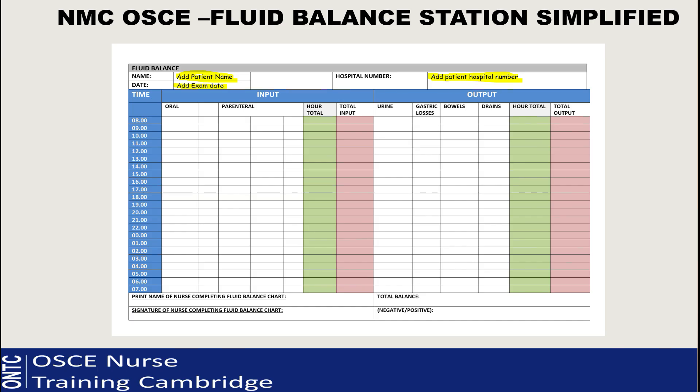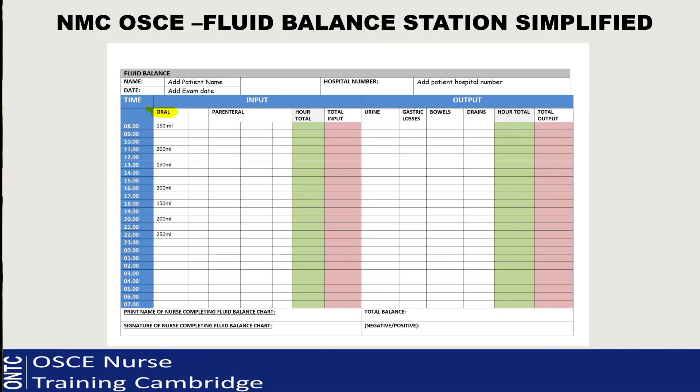Now let's go through how to complete the chart step by step. First, add your patient's name, add the date of your exam, and then the hospital number, which is given on the summary sheet. Add that information first - that's the first job.